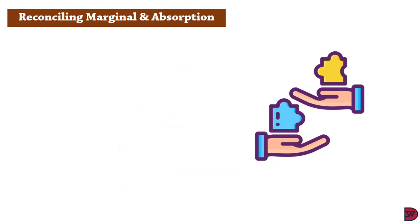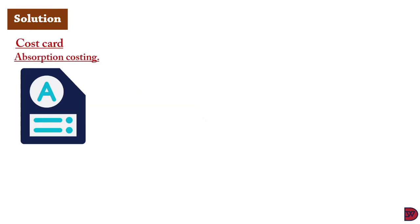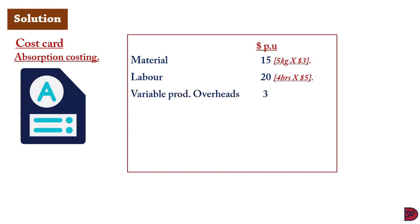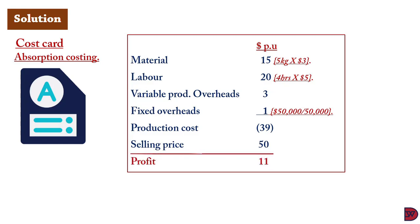Working this under absorption costing will provide a totally different figure. For reconciliation, note that the fixed cost per unit multiplied by the difference between opening and closing units will account for the difference between the two methods. Using the same Geo PLC example, the absorption costing cost card gives: materials $15, labor $20, variable production overheads $3, plus fixed overheads of $1 per unit ($50,000 ÷ 50,000 budgeted units), giving a total production cost of $39. The profit per unit is therefore $50 − $39 = $11.